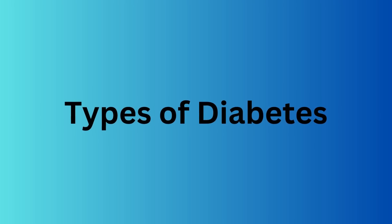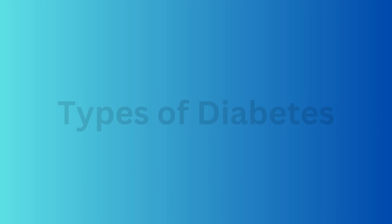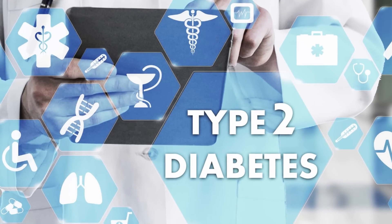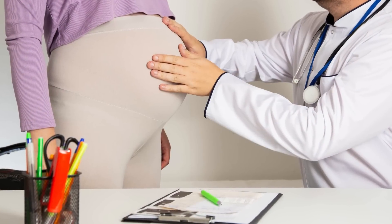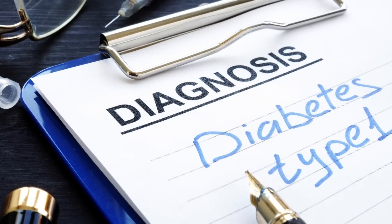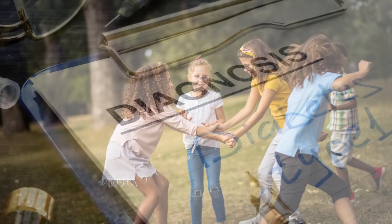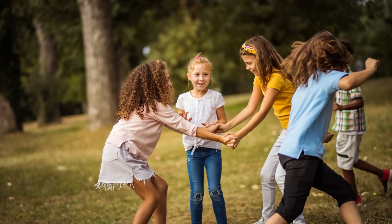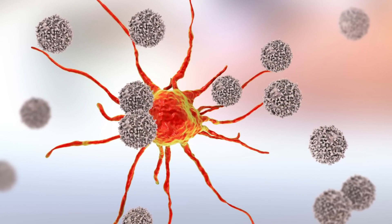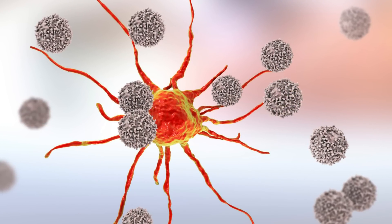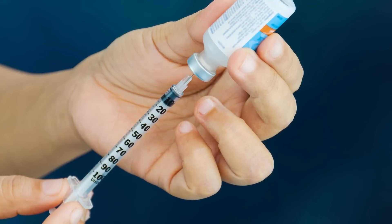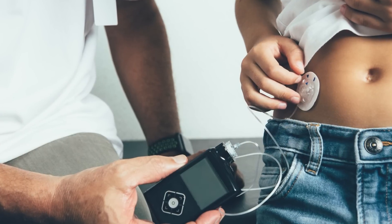Types of diabetes: Type 1, Type 2, and Gestational Diabetes. Type 1 diabetes usually develops during childhood or adolescence when the immune system attacks and destroys the insulin-producing cells in the pancreas. People with Type 1 diabetes require daily insulin injections or the use of an insulin pump to survive.